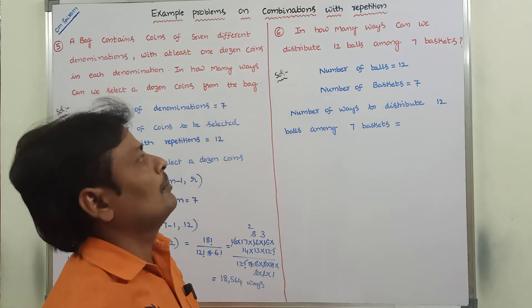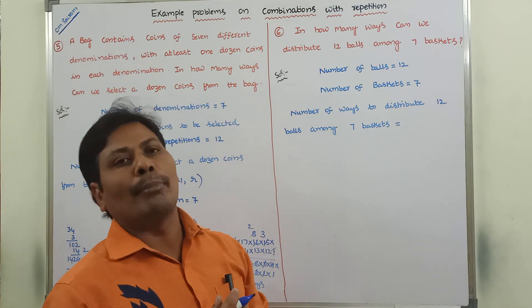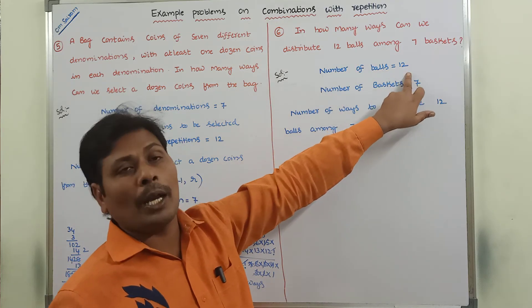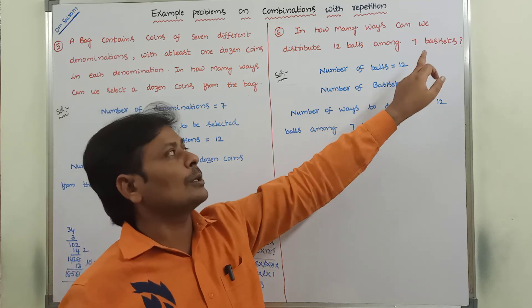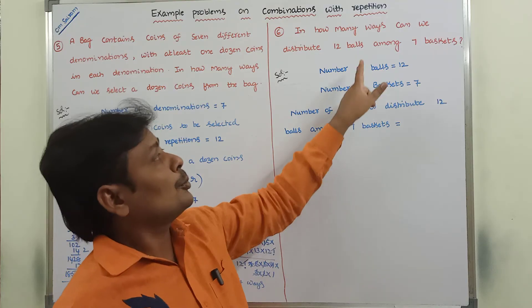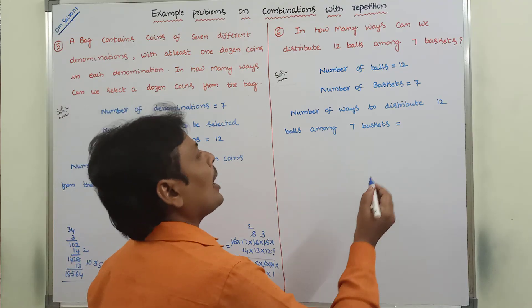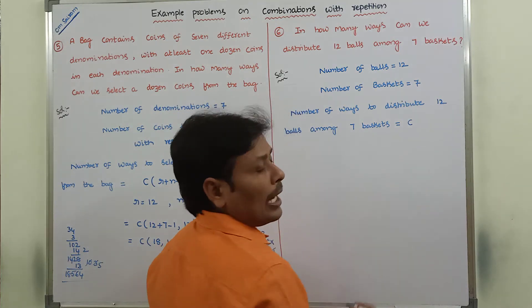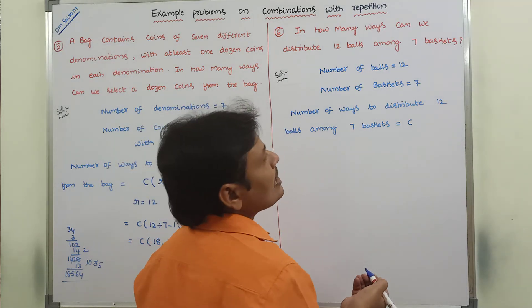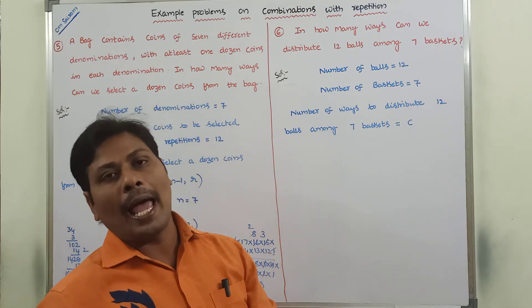Next problem: in how many ways can we distribute 12 balls among 7 baskets? Here, the number of balls is 12 and the number of baskets is 7. Repetition is allowed, so we use combinations with repetition. The 12 balls may be distributed into 7 baskets with repetition allowed.